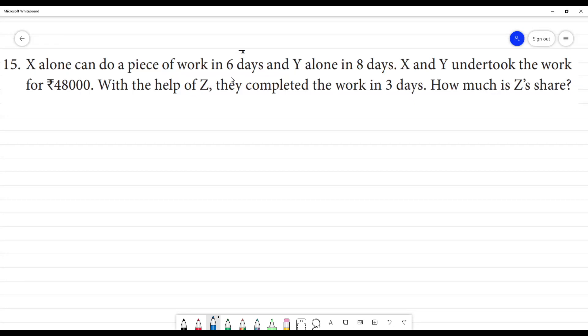X alone can do a piece of work in 6 days, Y alone in 8 days. X and Y undertook the work for 48,000. With the help of Z, they complete the work in 3 days. How much is Z's share?